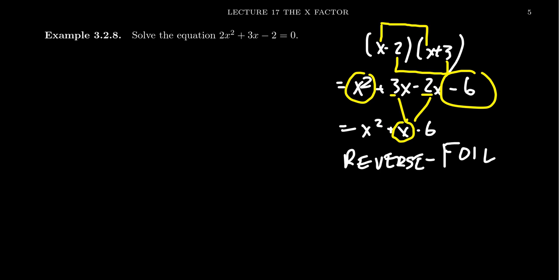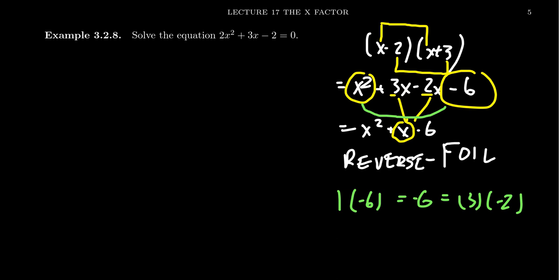It turns out we can work this thing backwards in the following way. We're going to take the first terms and the last terms and multiply them together. You take the coefficient — one times negative six — and that's going to give you a negative six. Taking this negative six, we're going to look for another factorization of negative six, such as three and negative two. Notice that negative six factors as three and negative two. The significance of this is that when you combine three and negative two together using addition, three minus two equals one.